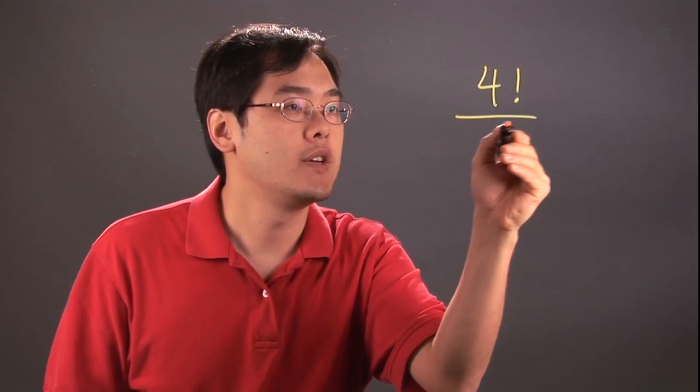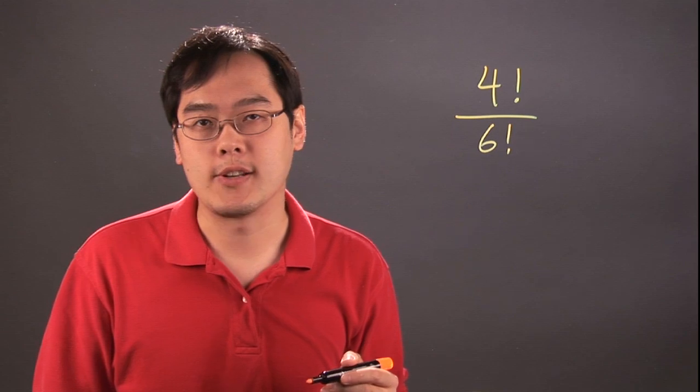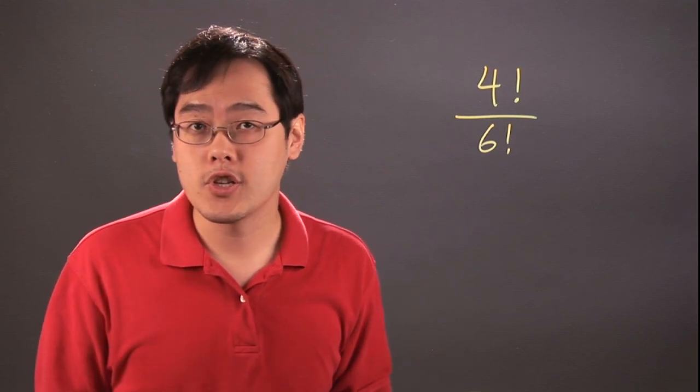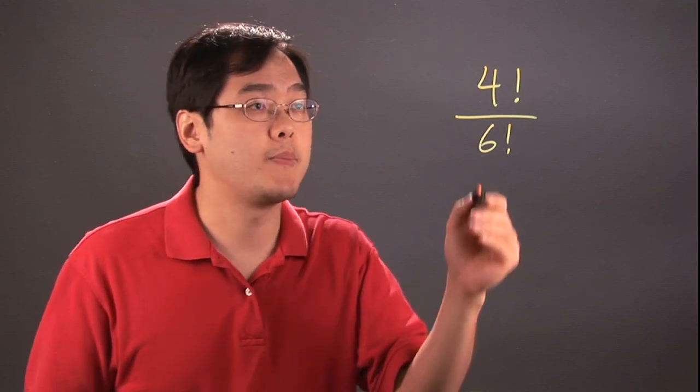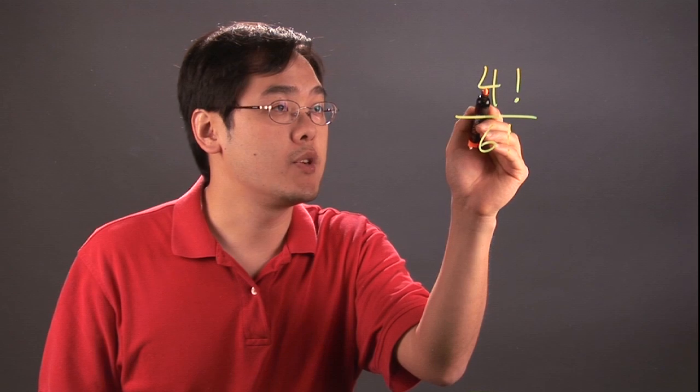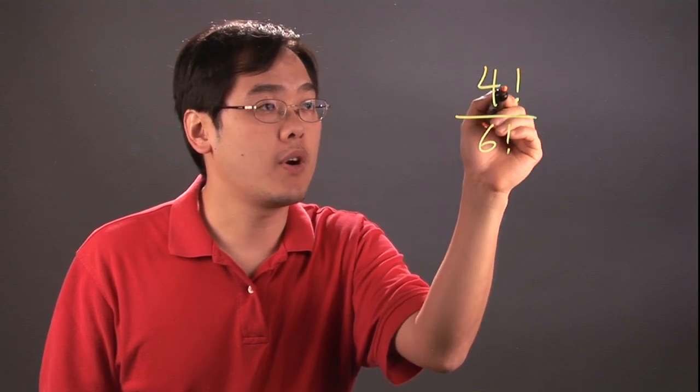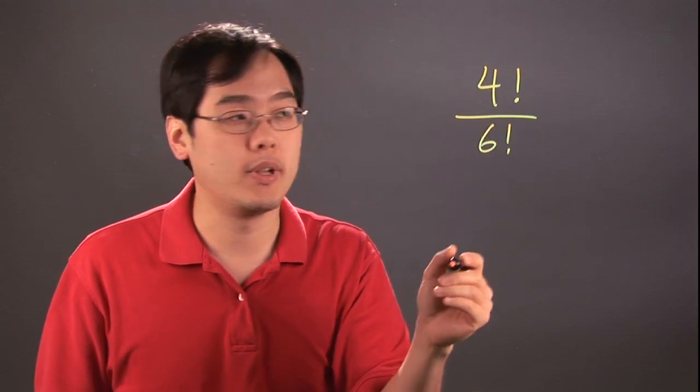Here's a quick demo to show you how factorials work in fractions. Suppose you want to divide 4 factorial by 6 factorial. What you've got to think about is the definition of the factorials themselves. It's basically the numbers starting with the number 4, then working its way to 1, and then multiplying.